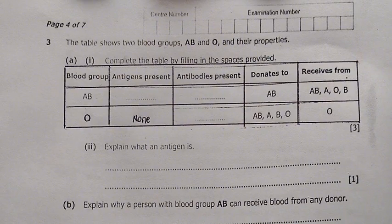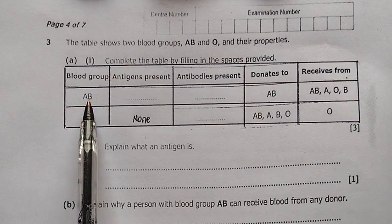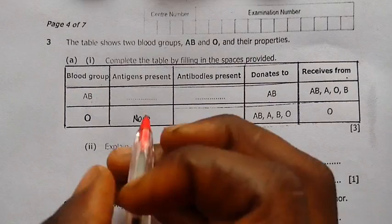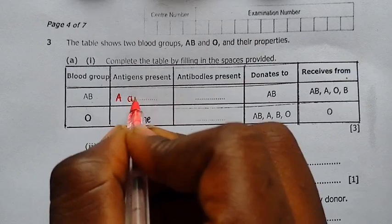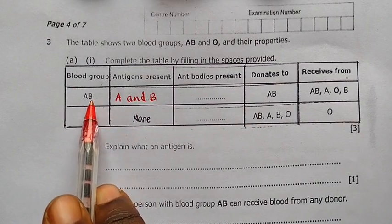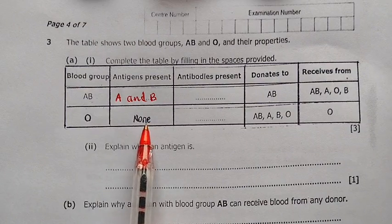Antigens are presented by a capital letter while antibodies are presented by a small letter. Looking at the table, a person with blood group AB is going to have antigen A and B — that's what it means. So we write antigen A and B for blood group AB. A person with blood group O doesn't have any antigen — no wonder it's written 'none.'